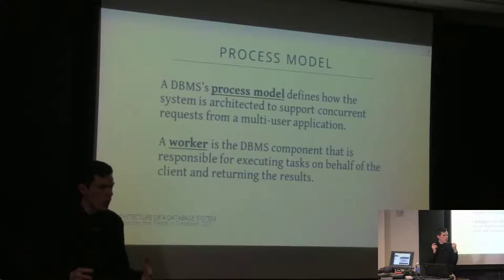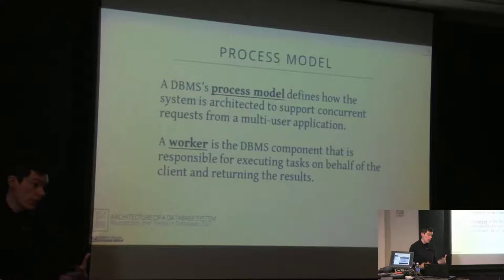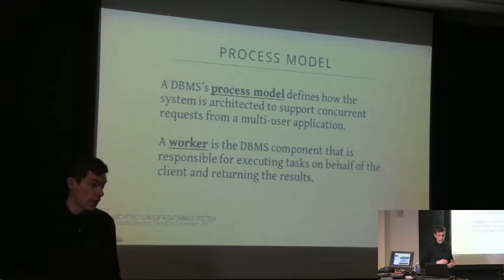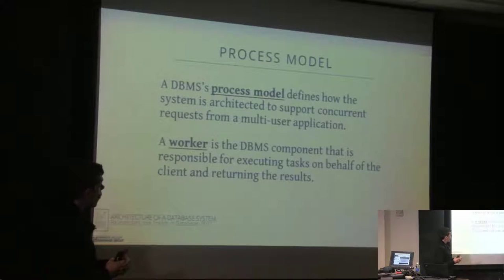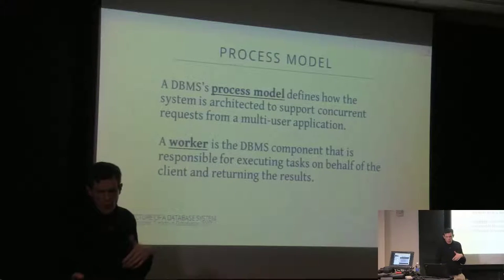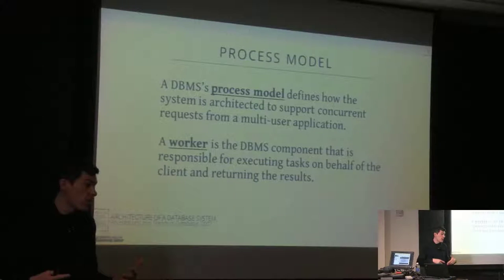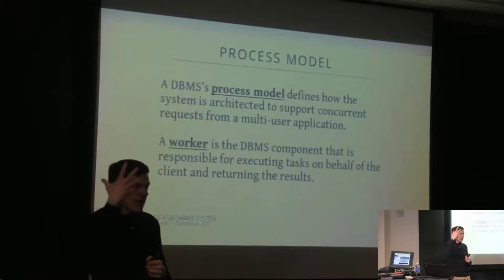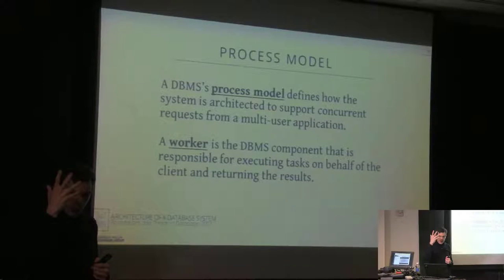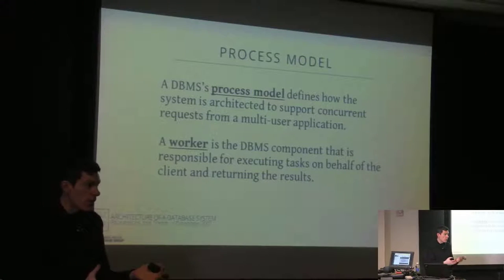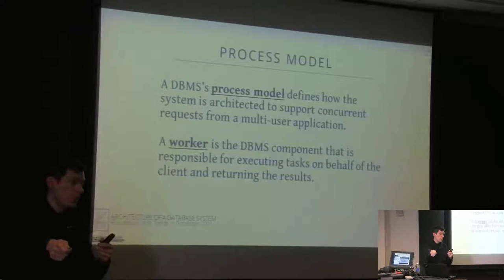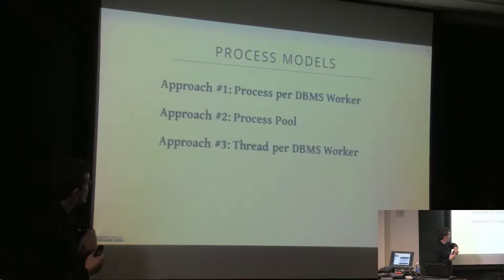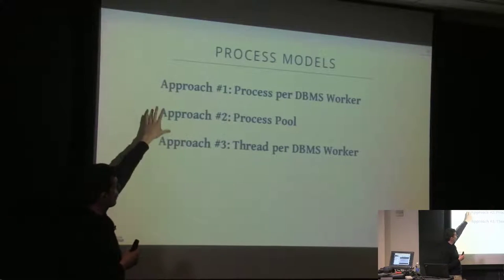To support a multi-user application with multiple transactions and queries running simultaneously, we need a process model — the high-level architecture defining how the system allows concurrent operations. Within this model we have workers, which I'll call worker threads throughout the lecture. A worker is the construct responsible for taking tasks generated by the query planner and executing them to produce results, which can be fed into another task or returned to the client. There are three different process models any database system can implement.